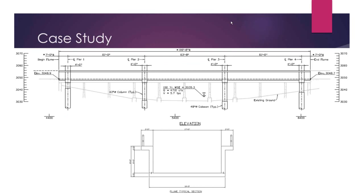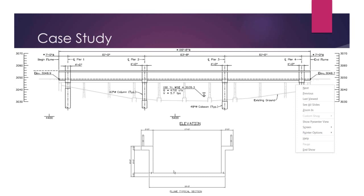Here's the overall length and span layout with the seven-foot overhangs. The cross-section of the superstructure is a flume carrying water — 17 feet wide and seven feet tall — with wings at the top to resist negative moments since this is a continuous structure. Those flanges also double as a walkway for maintenance workers.